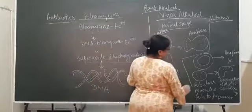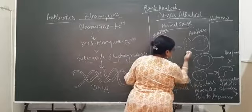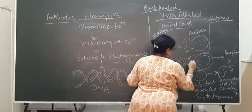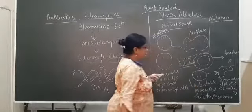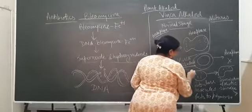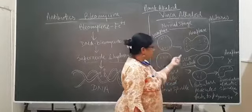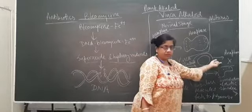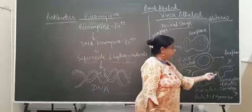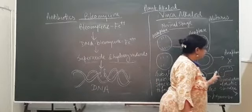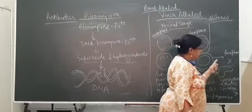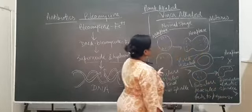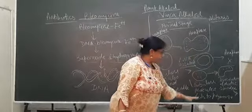But in the presence of vinblastine, vincristine, or vinblastine, what happens? The tubulin molecules fail to polymerize to form spindles. This leads to disruption of mitotic division and further cellular death. In this way, vinca alkaloids act as anti-cancer agents.